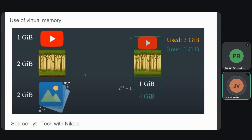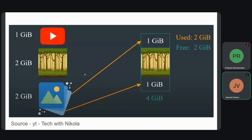We only have one gig of RAM available. So let's say we clear out YouTube from physical memory — now we have two gigs of RAM free, which is equivalent to what we need for the photo editing software. But this is not the case, because the two gigs of RAM we have is in fragments. For running any process we want contiguous memory, not fragmented memory. This two gigs of fragmented memory is not useful to us, and to solve these kinds of issues we use virtual memory.